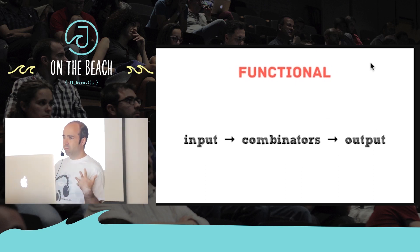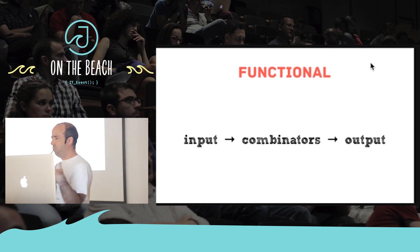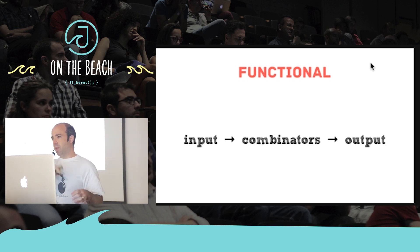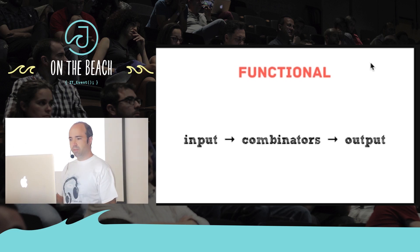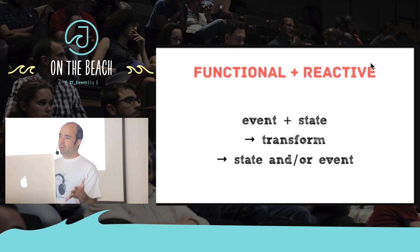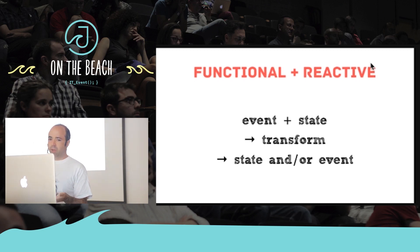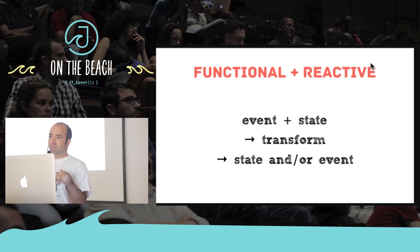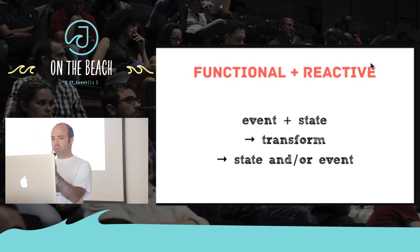The functional part means we want to structure our code so that you take some input, you transform that input, and then you produce some output. The output then becomes the input for something else, so you start chaining things up. Adding the reactive part means our input is normally some kind of event — something that's happened — along with the current state of your application. Then you transform it and either produce a new state as a result of receiving an update, or produce an event, such as sending an HTTP request when clicking a button.